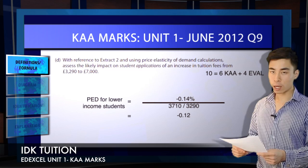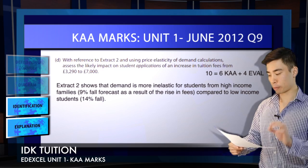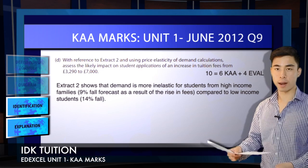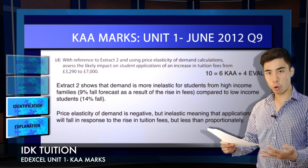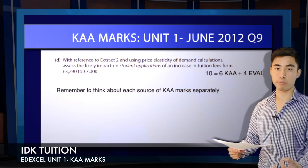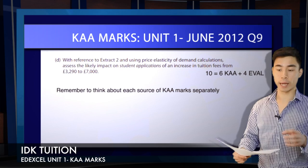We've already picked up five marks out of our six KAA marks, and we still have two more sources to exploit. The question clearly says 'with reference to extract two,' so make a reference to the extract — there are two further marks available for that. Then there are further marks for explanations. So with five different strands of KAA marks and only six to pick up, you should appreciate it's not a particularly difficult exercise if you include each of these sources separately.